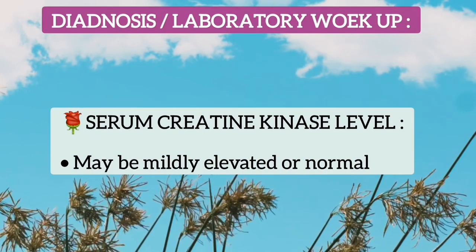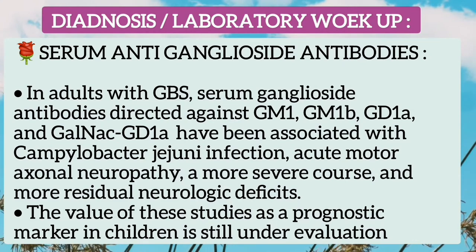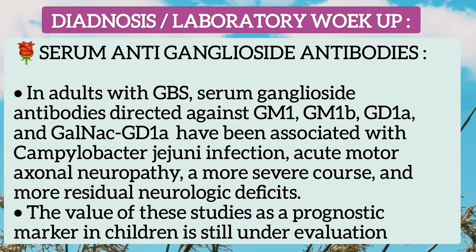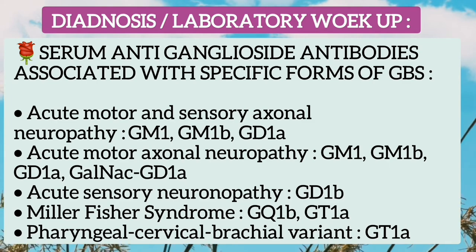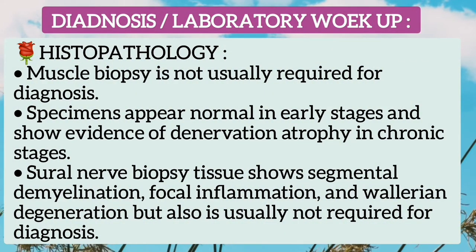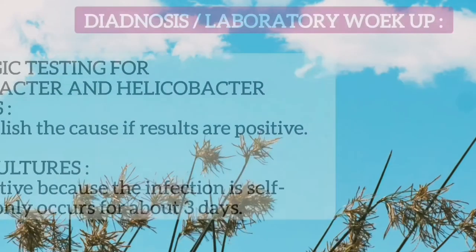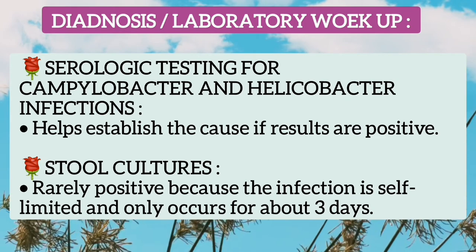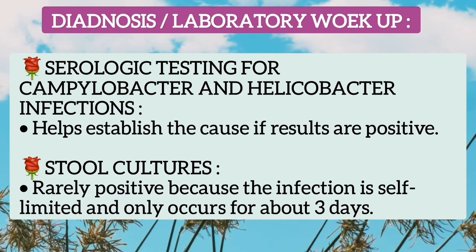In GBS, serum creatine kinase level may be mildly elevated or normal. Certain serum ganglioside antibodies — GM1, GM1b, GQ1b — have been associated with Campylobacter jejuni infection, acute motor axonal neuropathy, a more severe course, and more residual neurological deficit, though these studies are still under investigation in children. Muscle biopsy is not usually required for diagnosis; it is normal in early stages and shows denervation atrophy in chronic stages. Sural nerve biopsy shows segmental demyelination, focal inflammation, and Wallerian degeneration. Stool cultures for Campylobacter are rarely positive as the infection is self-limited.